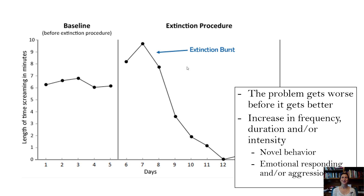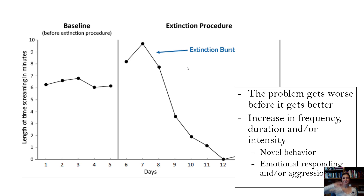This happens in real life too. If you've ever broken up with somebody and they blow up your phone with text messages — that's an extinction burst. You were reinforcing their texting by responding, and when you stop responding they send a huge influx of messages. If you respond during that burst, you've reinforced a worse instance of the behavior. Best thing to do is don't respond, and eventually the text messages will decrease.